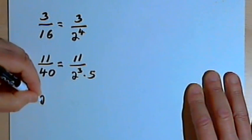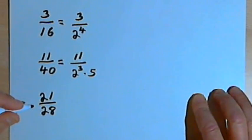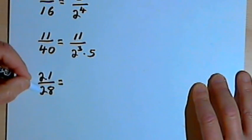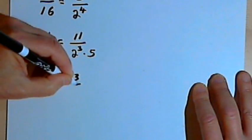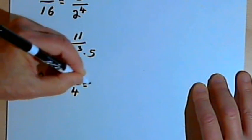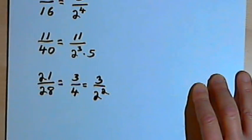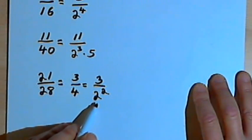If I have 21 over 28, before I decide whether it terminates or not, I've got to reduce it to lowest terms. So 21 and 28 both divide by 7. That means I'm going to end up with 3 over 4. And 4, of course, is 2 times 2, or 2 squared. So this will terminate, because all I've got in the denominator is 2s.